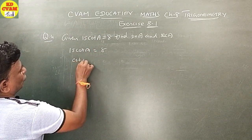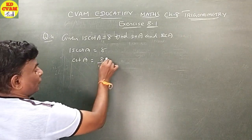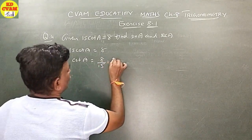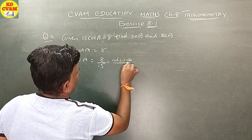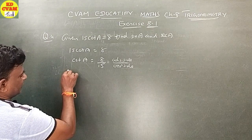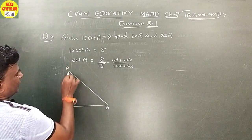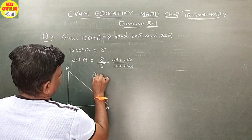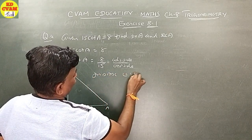15 cot A equals 8, so cot A equals 8 upon 15. Cot A is equal to adjacent side upon opposite side. So adjacent side is 8 and opposite side is 15. Taking triangle ABC with angle C equal to 90.